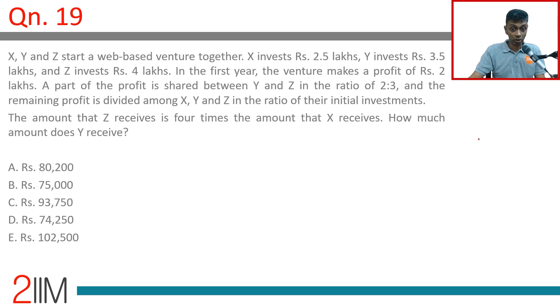X, Y, and Z start a web-based venture together. X invests 2.5 lakhs, Y invests 3.5 lakhs, and Z invests 4 lakhs. The ratio is 5:7:8. In the first year,